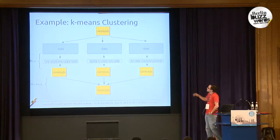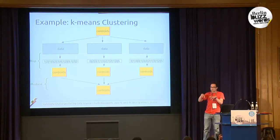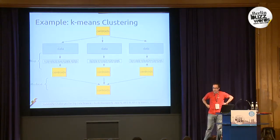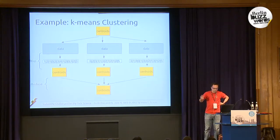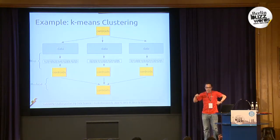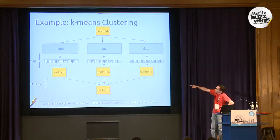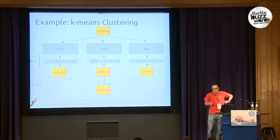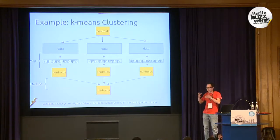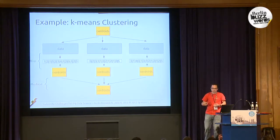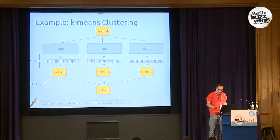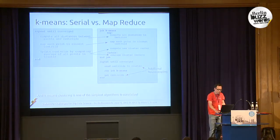First you distribute the centroids to all the nodes — this is the only non-parallel step. Then you compute the distances between all data points and the centroids and assign them to the nearest one — this is the map step, done fully in parallel. You can also compute the centroids for the new clusters on each pack of data and then later combine them to get the new centroids for all the data — that would be the reduce step.